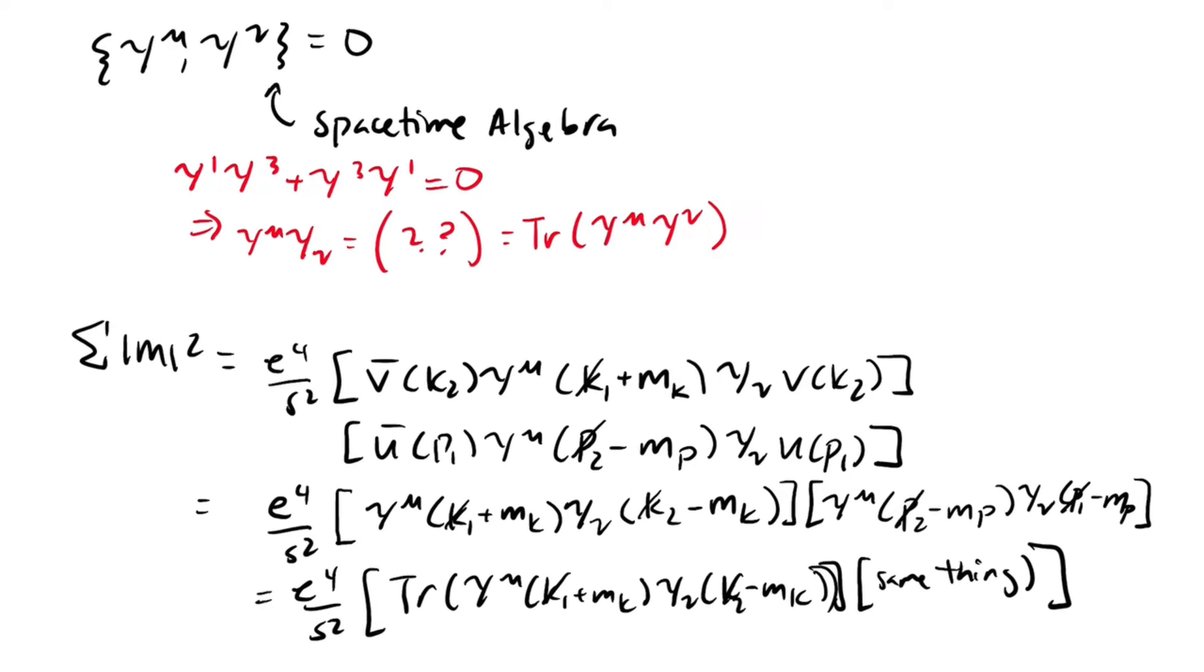Remember that the trace of a matrix is just the sum of its components along the diagonal. Since all diagonal components of the product of gamma matrices yield zero due to the space-time algebra, only diagonal entries of gamma mu gamma nu will contribute. In other words, the trace of that matrix.